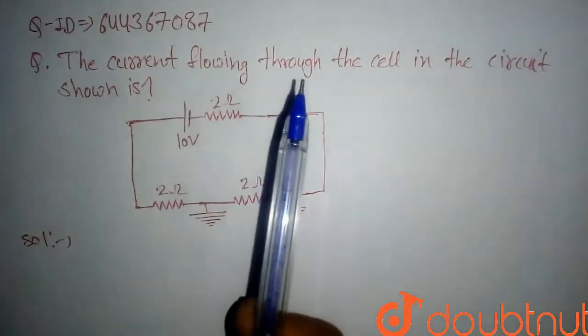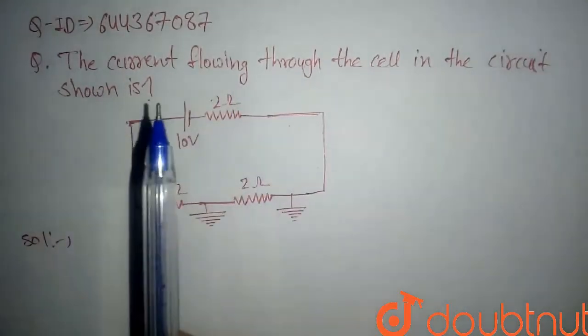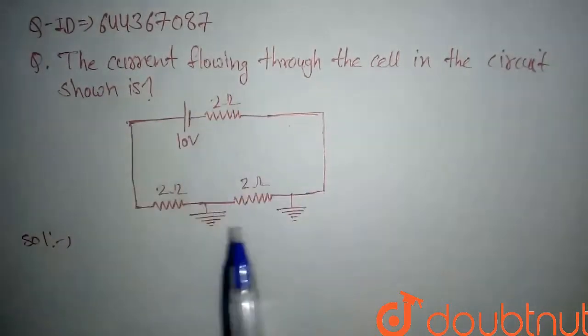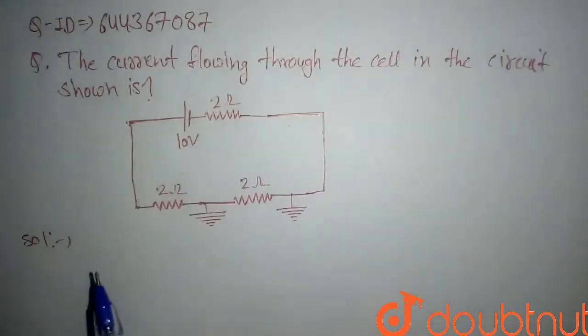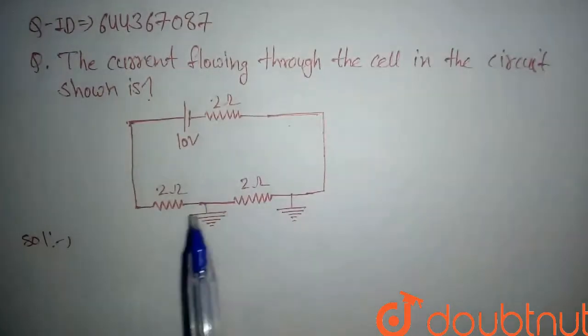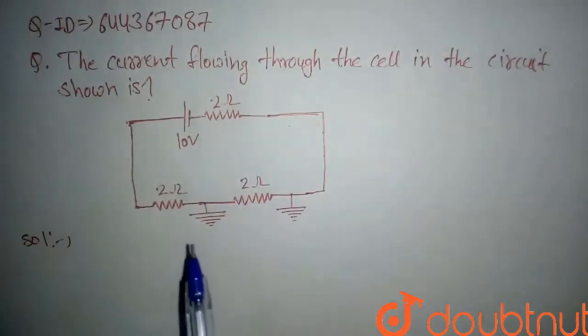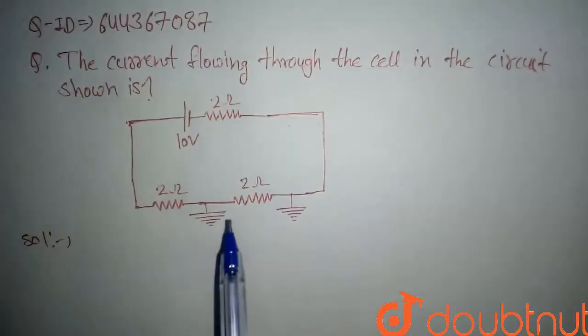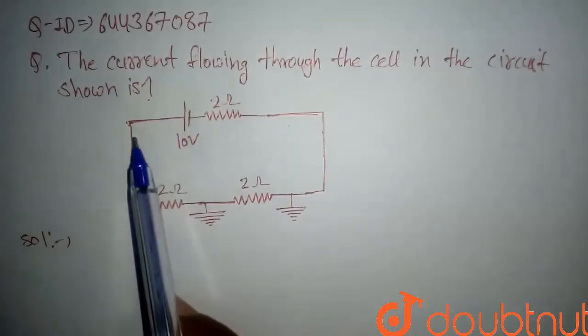The current flowing through the cell in the circuit shown is... So we have this circuit. If we see, there is no current flow through this 2-ohm resistor because it is connected between ground terminals. The current here comes to this resistor and goes through to the ground.